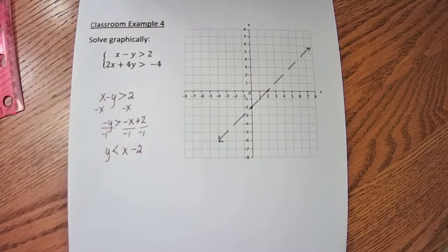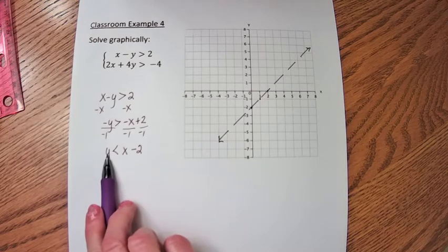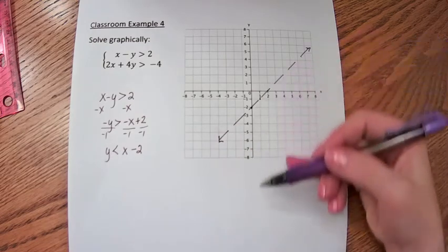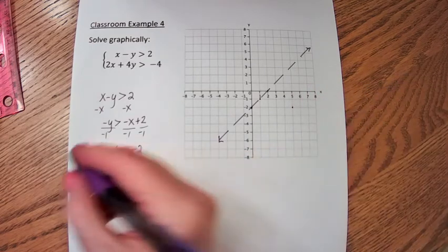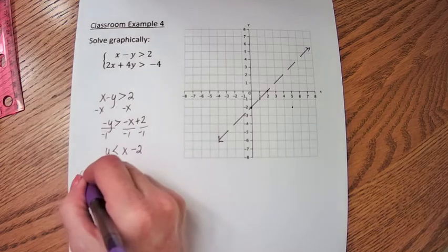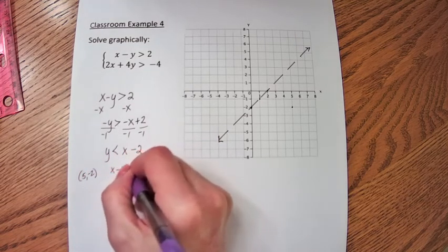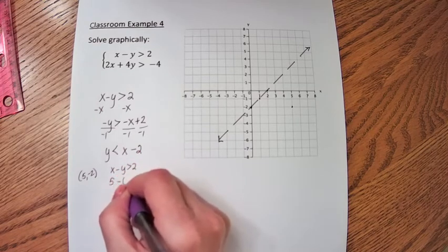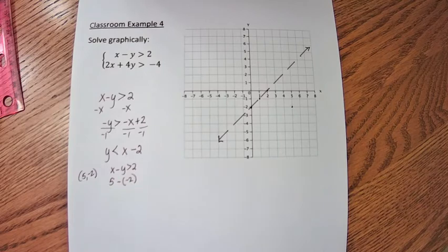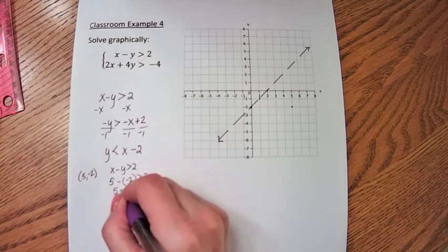Now for this purple region, do I want the y's that are bigger than the line or smaller than the line? Definitely smaller. So I'm thinking my test point is going to be (5, -2). So x minus y is greater than 2.